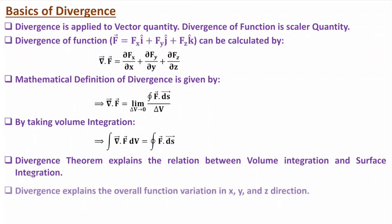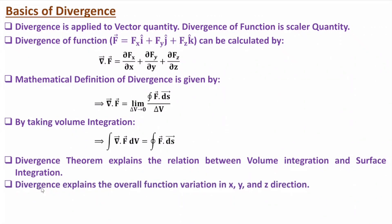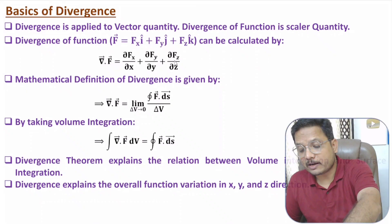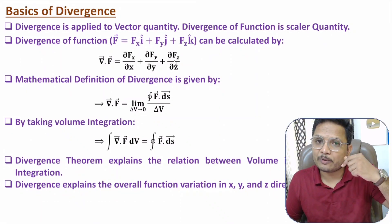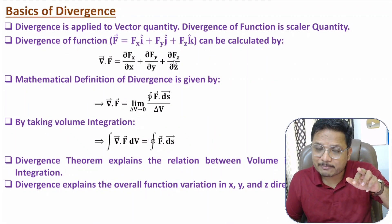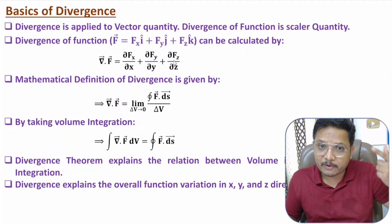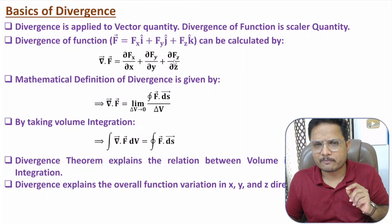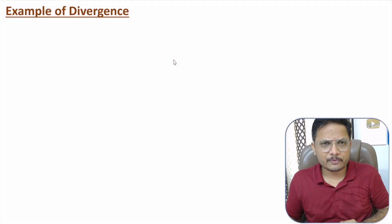Divergence explains the overall change of a function with respect to X, Y, and Z direction. Gradient explains a function's variation with respect to X, Y, Z direction individually, but divergence explains the overall change in the function with respect to all three directions.